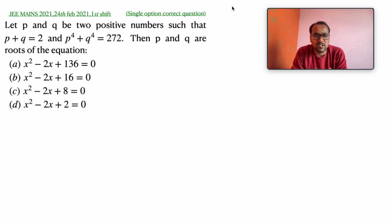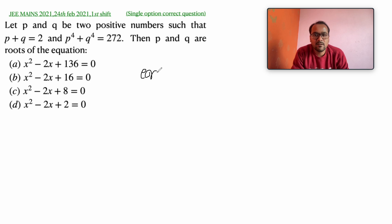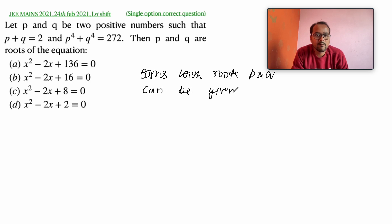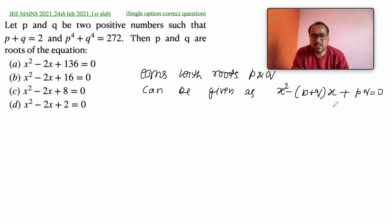We need to find the equation whose roots are p and q. As we already know, the equation with roots p and q can be written as x squared minus (p plus q) times x plus pq equals zero. In this question, p plus q is already given, so we basically need to find p times q only.